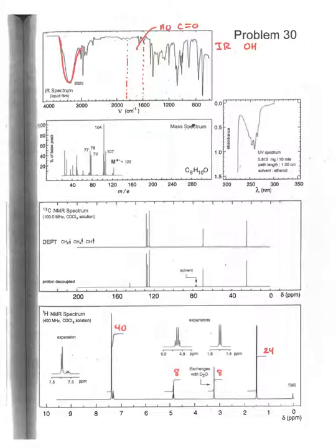That helps us a lot in that whatever structure we propose, there's no carbonyl, so that eliminates quite a bit of functional groups to consider. We've extracted the most amount of information from the IR at this point. We have an OH group, so we have an alcohol.